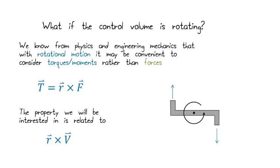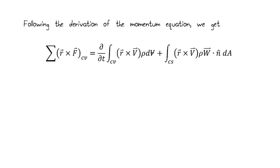The property that we're interested in this case is then related to r crossed with the velocity. So we're going to skip some of the analysis here and just go right to our momentum equation, or our moment of momentum equation, we might call it, for the Reynolds transport theory. So what we see here is that we've got the sum of r cross f on the control volume. This is our torques. Equals the rate of change of r cross v within that control volume, plus the rate of r cross v that's entering and leaving the control volume.